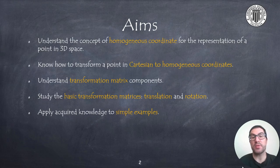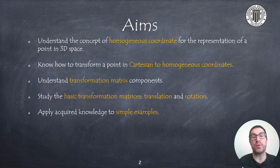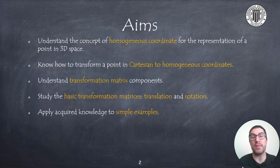The aims of this presentation are, on the one hand, to understand the concept of homogeneous coordinates for representing a point in 3D space. We will see how to transform a point in Cartesian coordinates to homogeneous coordinates and vice versa. This will lead us to introduce transformation matrices, which allow us to perform geometric transformations using basic algebraic equations. We will also see the elements of a homogeneous transformation matrix, and specifically focus on basic translation and rotation operations and their composition in the second part.